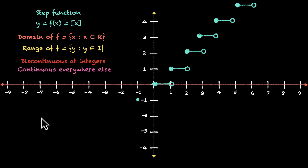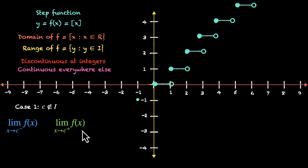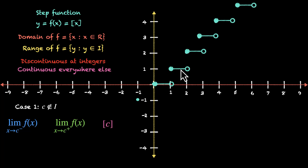Case 1: input c is not an integer. The left-hand limit as x → c⁻ of f(x) equals the right-hand limit as x → c⁺ of f(x), and both equal [c]. For example, at 1.5, moving slightly left gives 1.4999... and moving slightly right gives 1.511...; neither is an integer, so both give output 1, same as f(1.5). Since all three values match, the function is continuous for non-integer inputs.